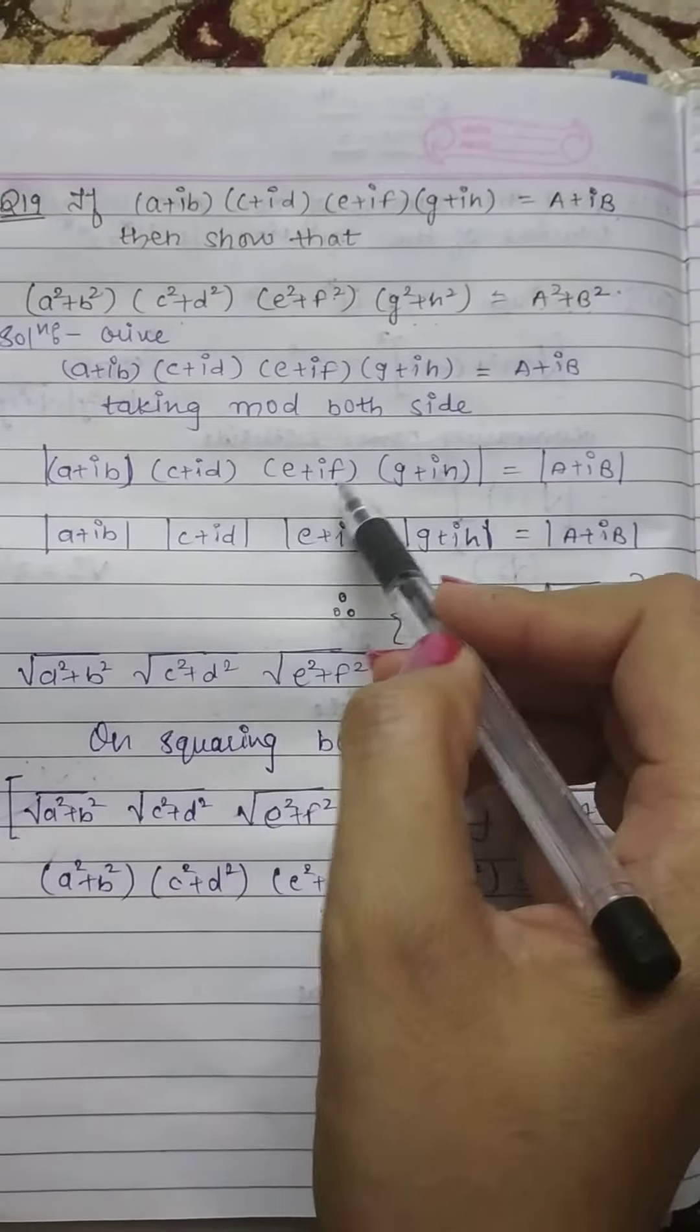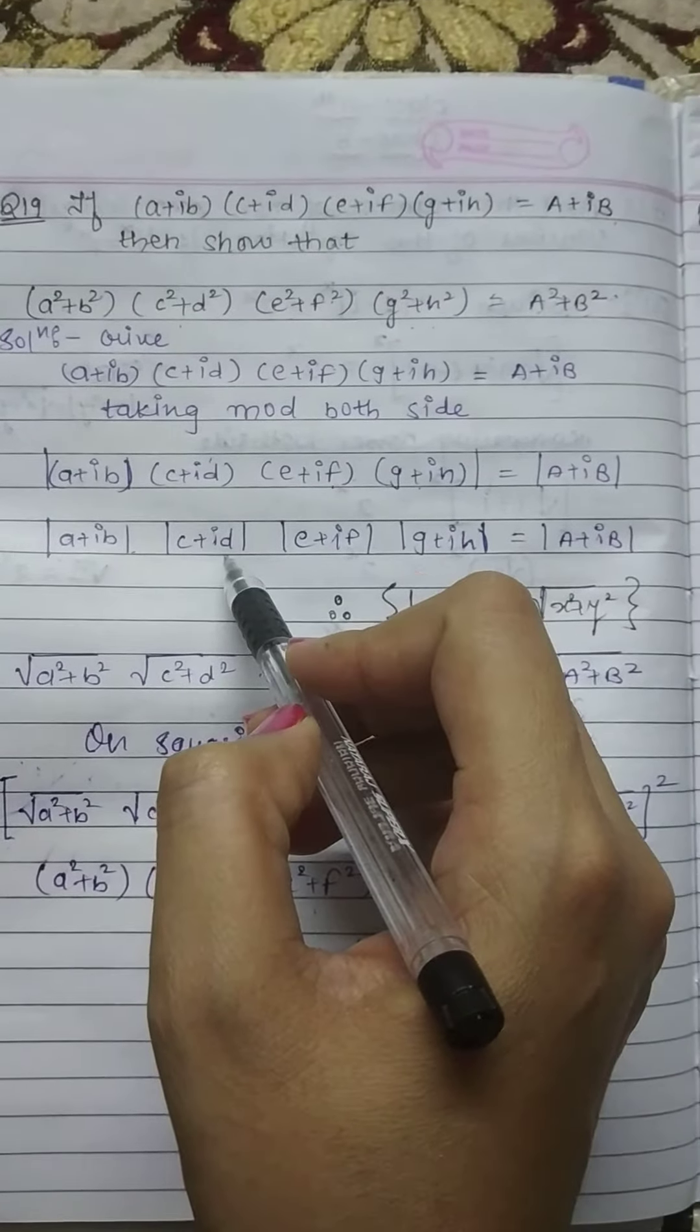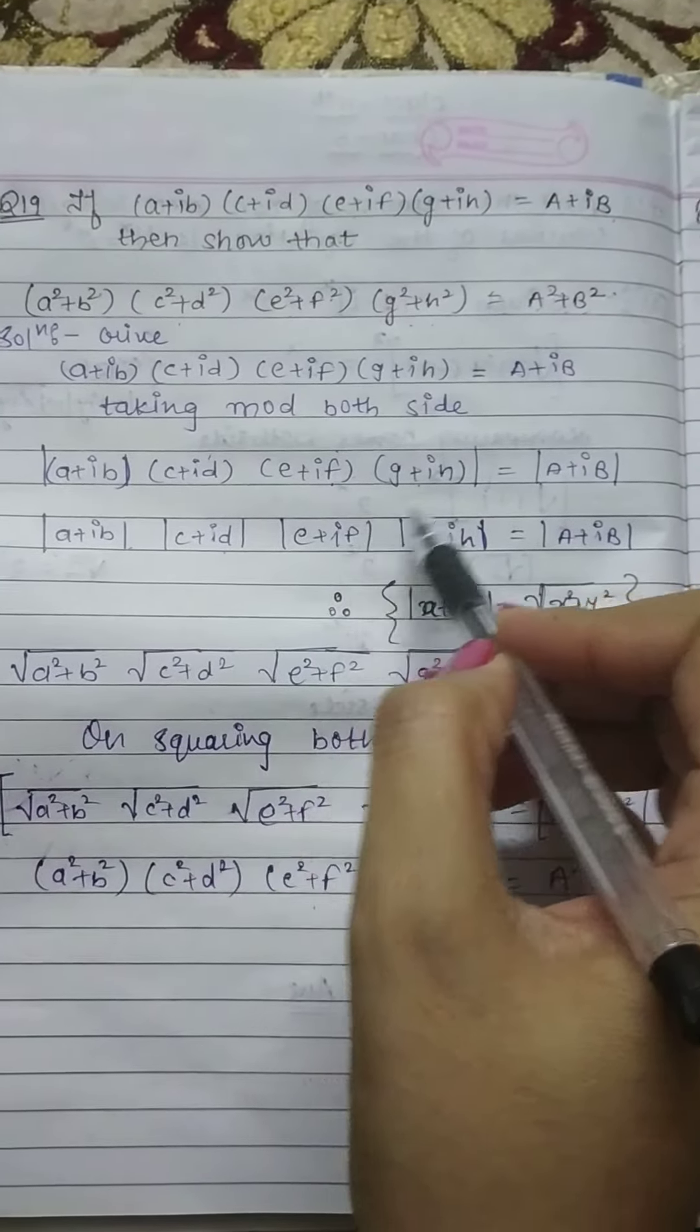How many brackets are there in modulus? Four. We can separate them: first bracket, second bracket, third bracket, and fourth bracket.